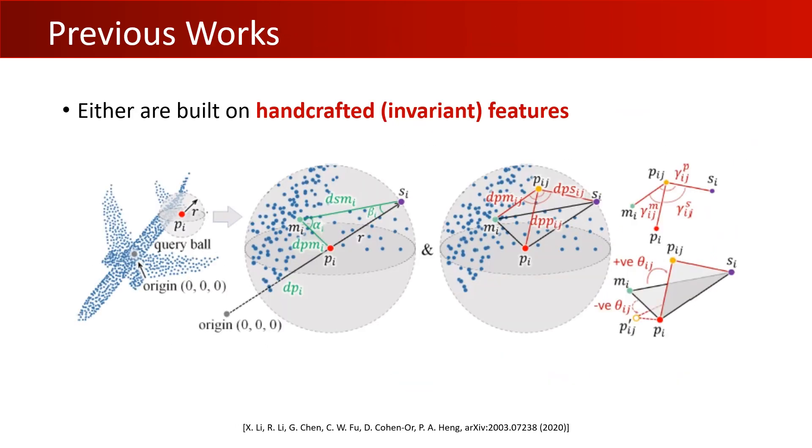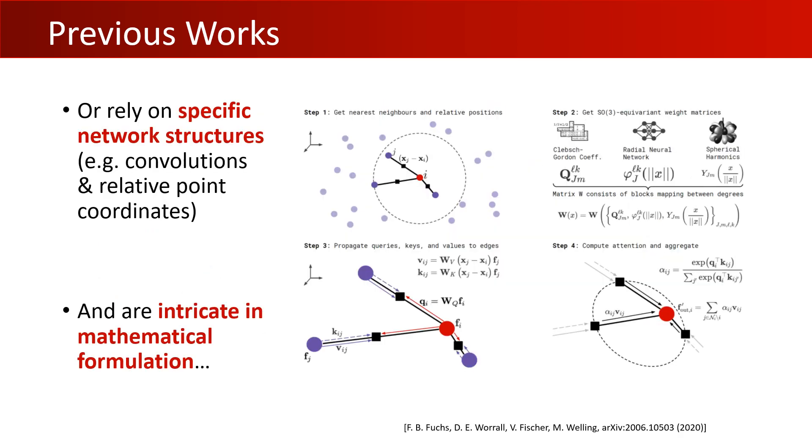A group of previous works have been trying to tackle this setting by creating handcrafted features at the input layer, but these features are usually problem-specific and are just invariant instead of equivariant. Recently, more systematic approaches have been introduced. Specifically, there are tensor-field networks and SE3 transformers.